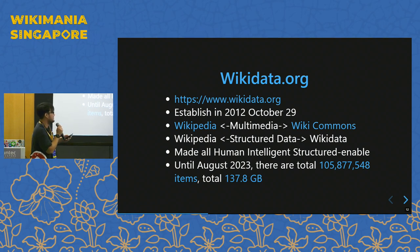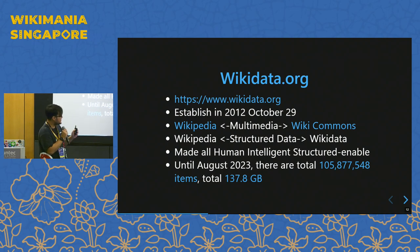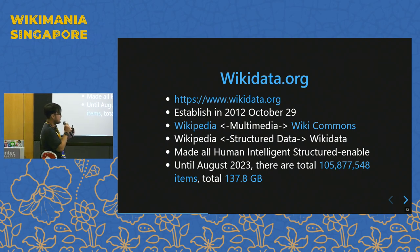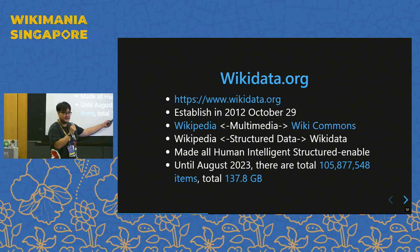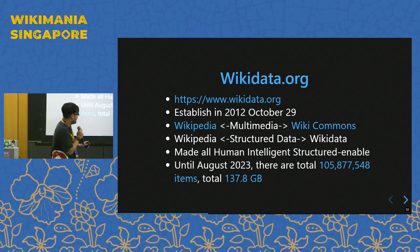Here's a quick statistic — it's over 100 million items on Wikidata. And the total volume of the dataset, if you want to download it, is over 100 GB.